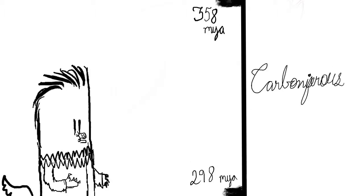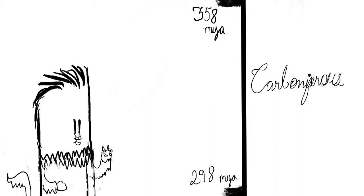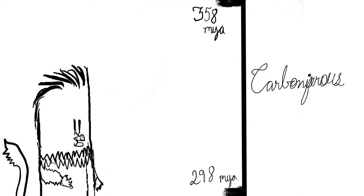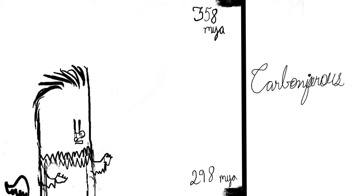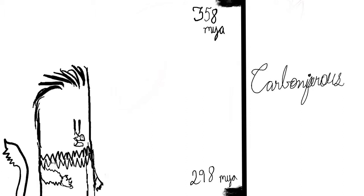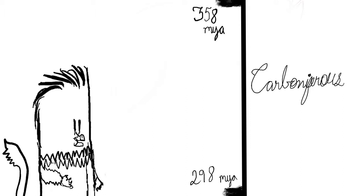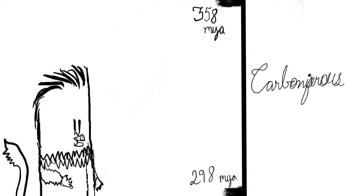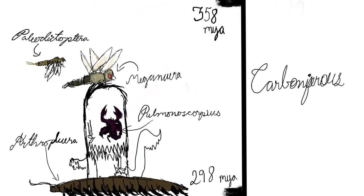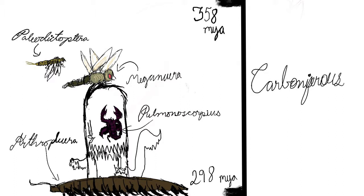The next period is the Carboniferous, and there are two things of significance: coal and giant insects. The Carboniferous means coal-bearing, because the process that started the formation of coal began during this period. Also, giant insects roamed the land. The last period in the Paleozoic era is the Permian, which had iconic animals like the Dimetrodon and Scutosaurus.